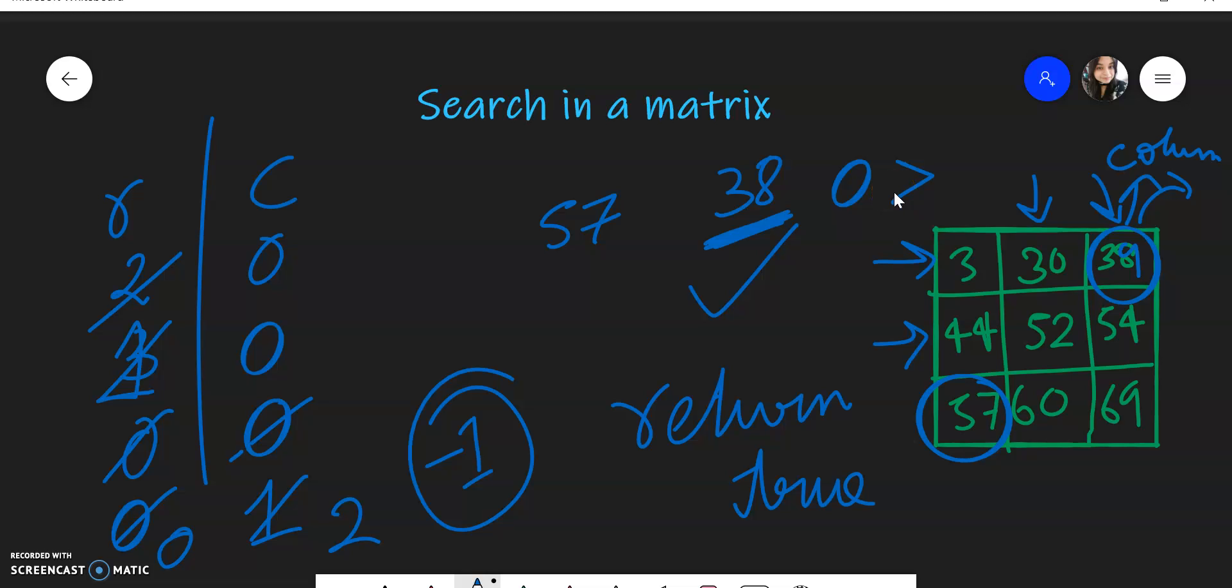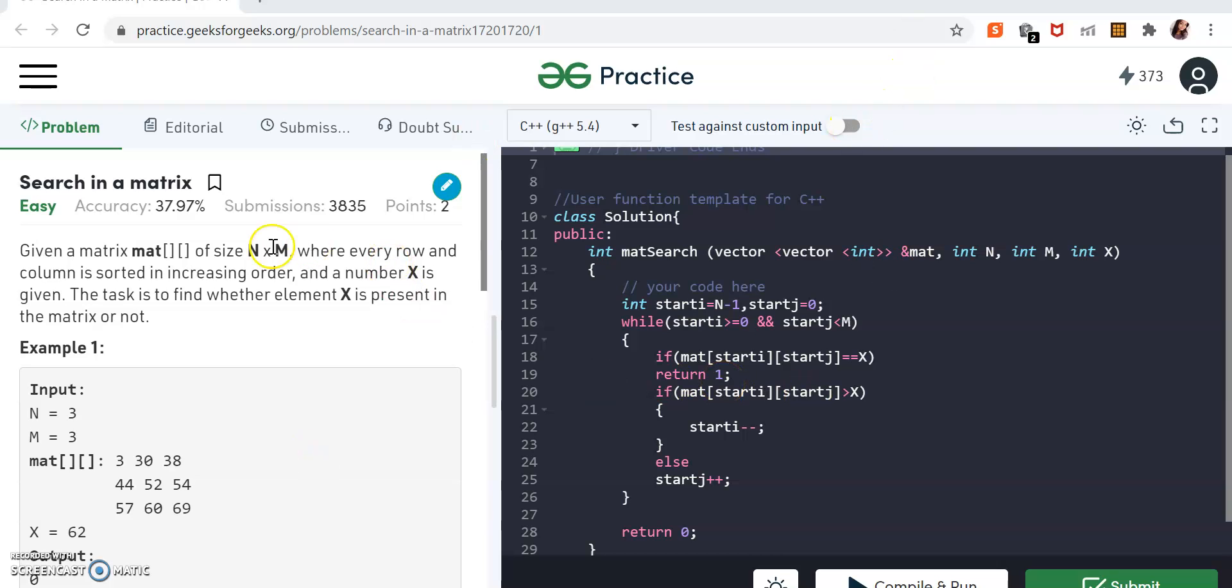Now I'll show you a code snippet and let's see how it is done. So this is the code snippet and this is the geeks for geeks prompt. So as you can see, we have initialized the start i, that is the row index, to n minus one and j to zero, which is the corresponding column index. We will check for the condition that i should be greater than zero and j should be less than whatever the column count is, right?